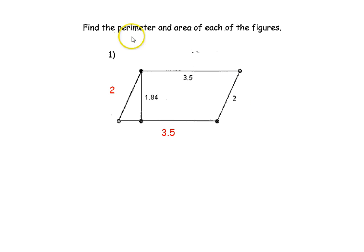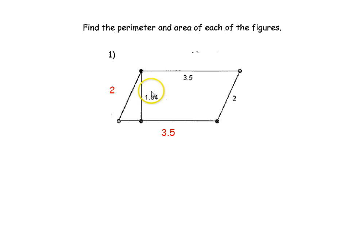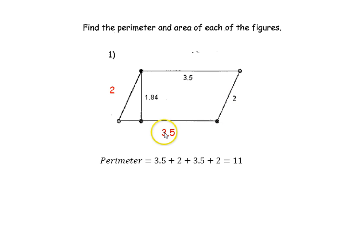Now I'm in a position to find the perimeter. To find the perimeter of any figure, you add up all the side lengths on the outside of the figure — so this 1.84 will not be necessary for finding the perimeter. I'm going to take 3.5, add it to 2, add it to 3.5, and add it to 2, and find that the perimeter of this figure is 11.